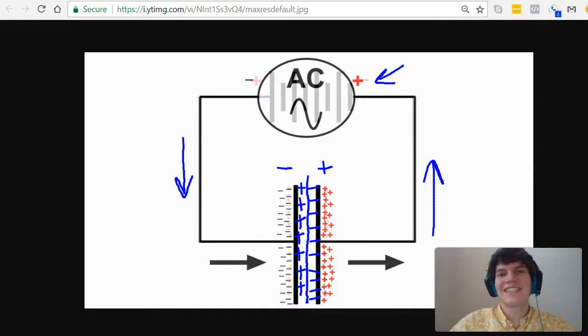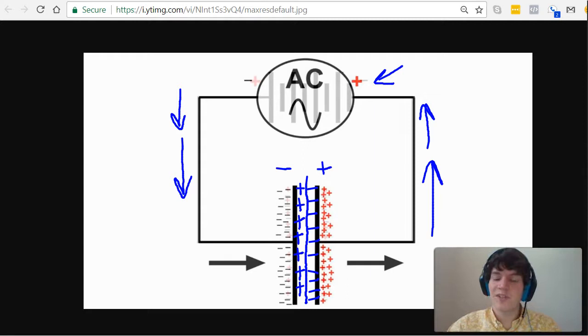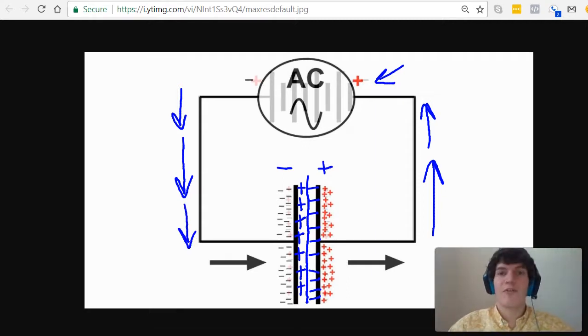What this does is it essentially decreases the relative distance between these two plates. And as we know about capacitors, when you decrease the distance between the plates, it's going to allow you to build up more charge on each plate. So because the voltage source is still going strong, it's going to force more electrons to travel through the circuit and build up on the negative plate, which means that there's going to be more positive on the positive plate as well.